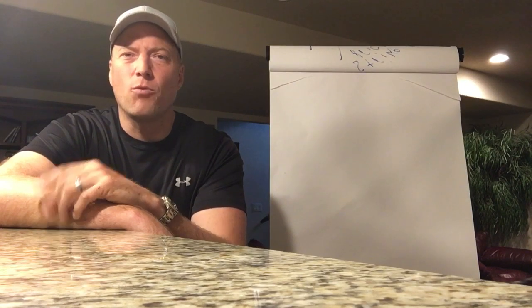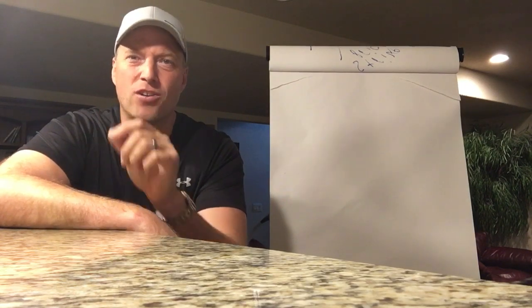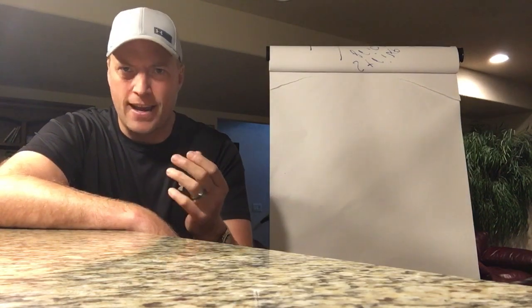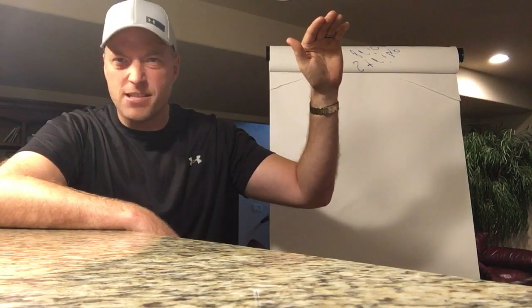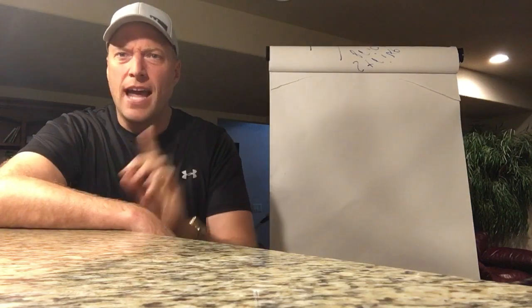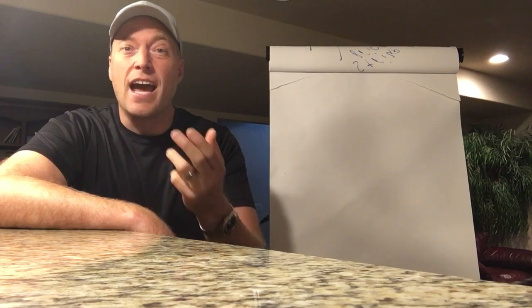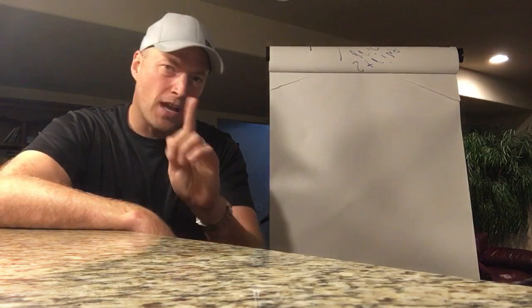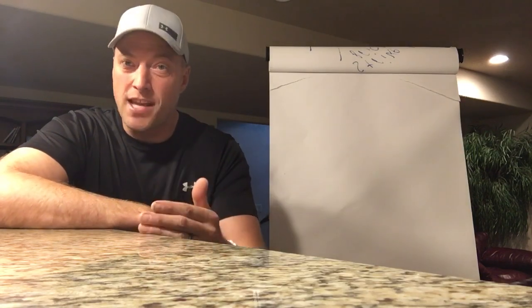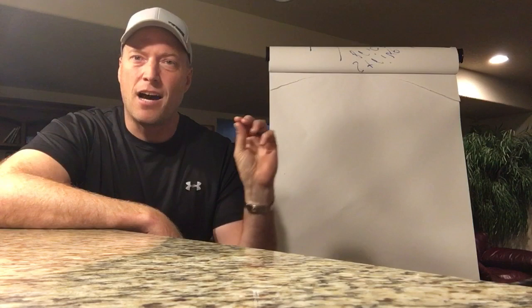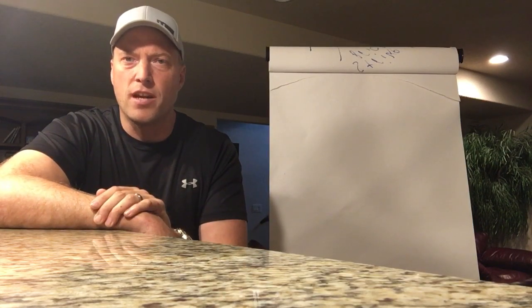Hello folks, Charlie Gipple here with the video of the week. With index products, whether IUL or index annuities, have you ever wondered how it is that insurance companies are able to give consumers an interest rate based off of 100% of the growth in an index, say the S&P 500, up to a cap? How is it that insurance companies can do that when interest rates are so low? I believe in it's not what you say, it's how you say it, and you'll see that common thread throughout all of my videos.